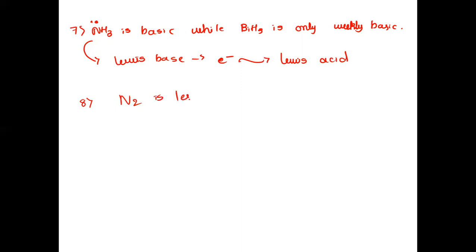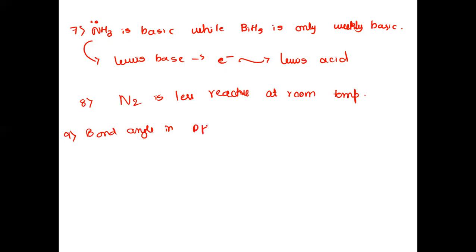Reasoning question 7: Nitrogen is inert due to the presence of a triple bond, which cannot be broken easily — the bond dissociation energy is very high. Last question for students to attempt: Why is the bond angle in PH4+ higher than in PH3? Please send me your answer today.